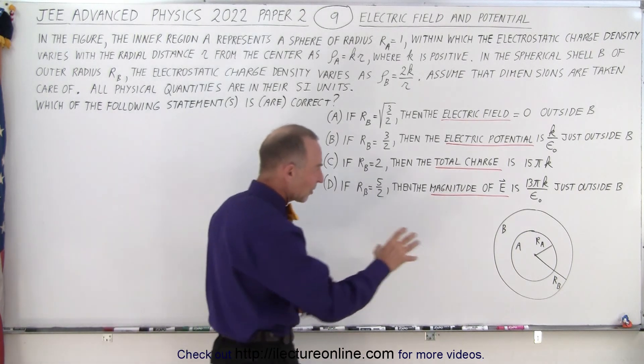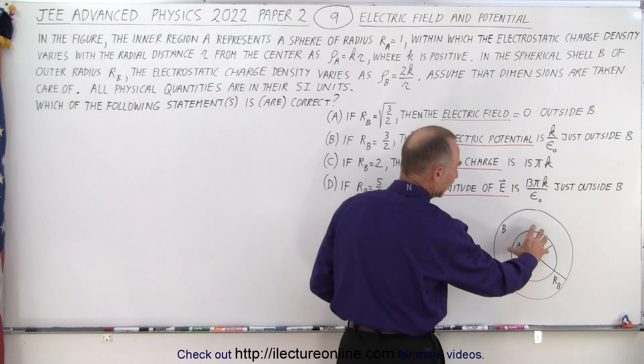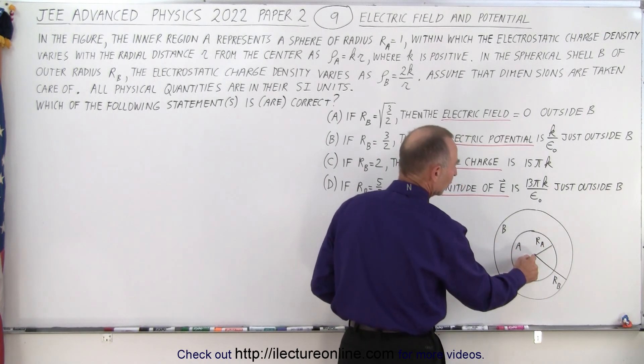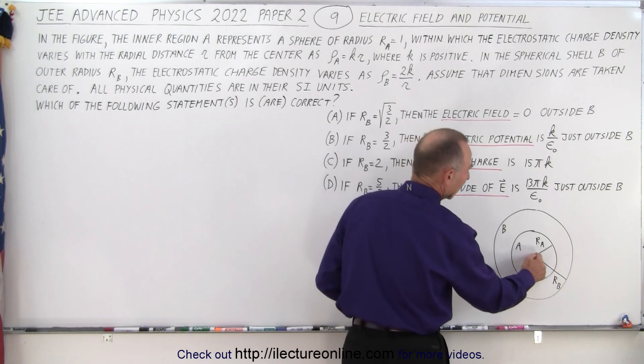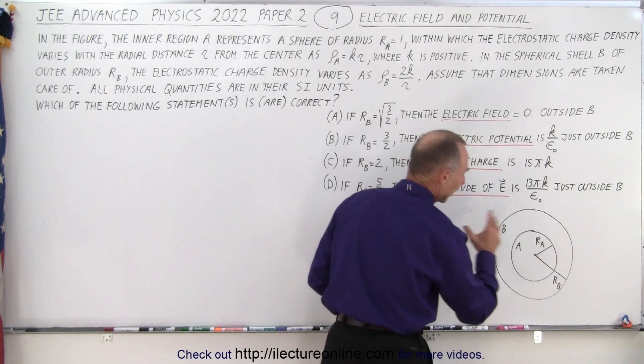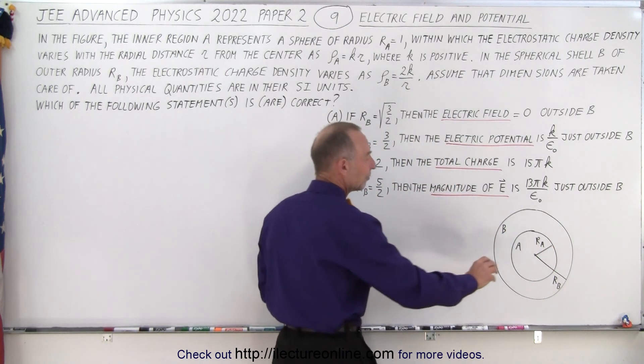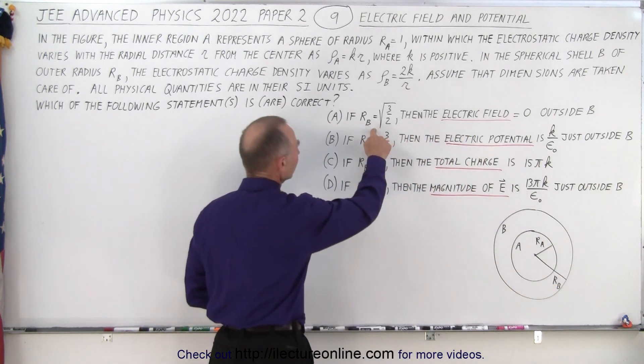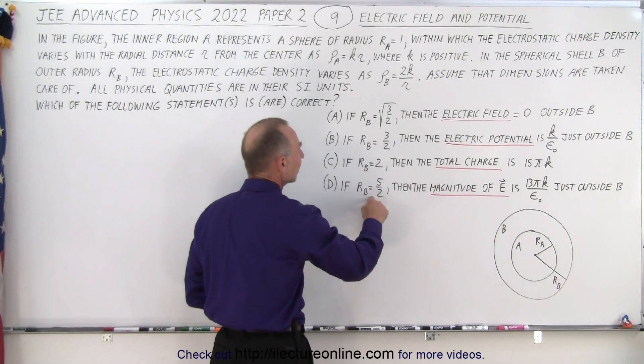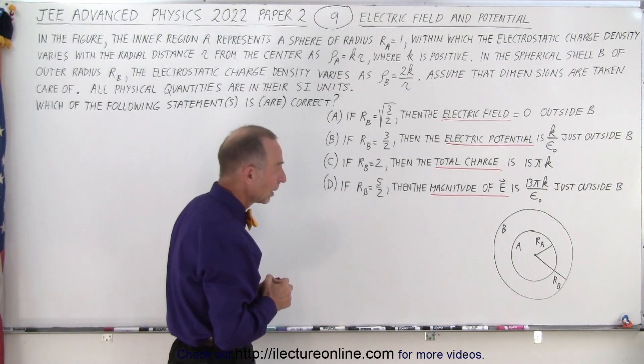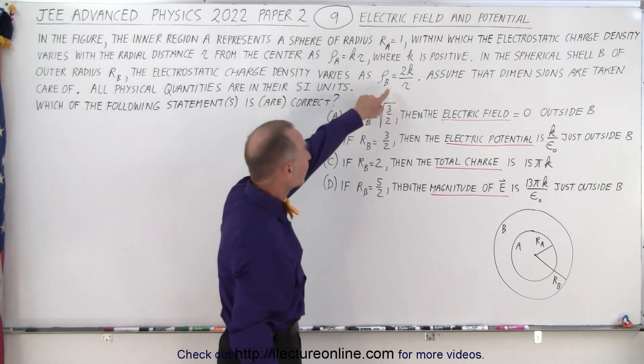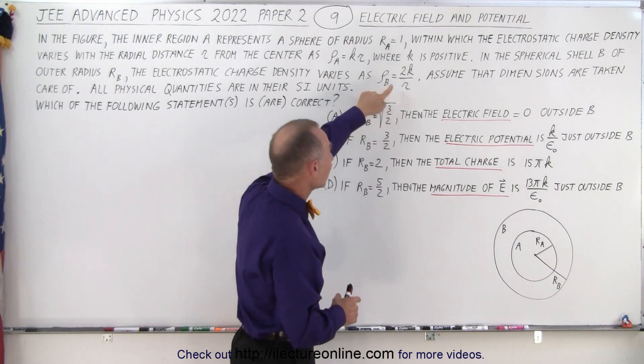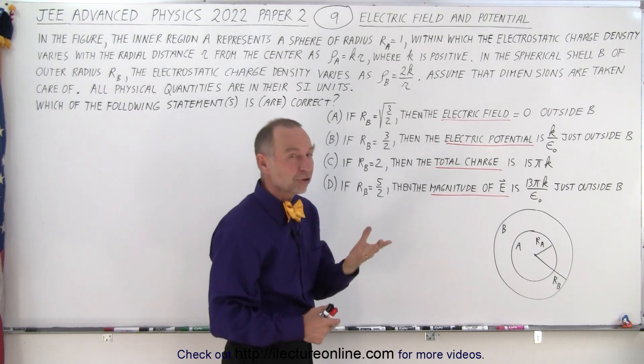Notice we have a sphere that has a density of charge that increases with increasing radius. So zero charge at the center and then increasing as you get to the outside of that sphere. And then for sphere or the shell B, notice that the answers contain different values for R sub B.